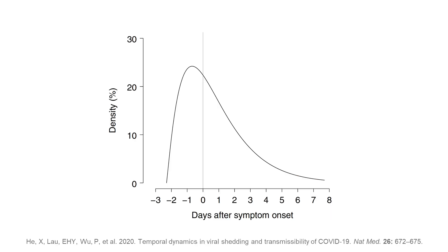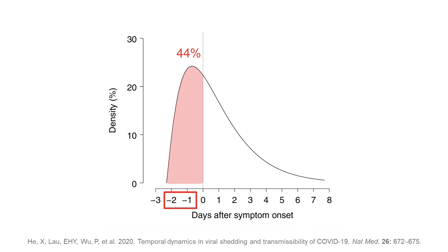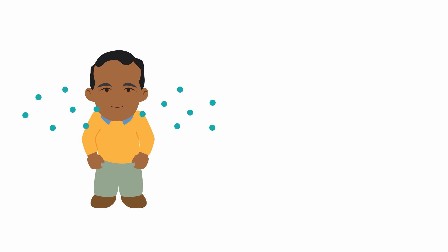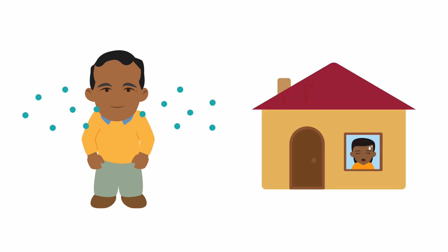We know that 44% of infectiousness occurs in the pre-symptomatic phase, specifically in the one to two days before symptoms start. So pre-symptomatic transmission is contributing greatly to the spread of this epidemic, and isolating only symptomatic individuals will not contain the spread.